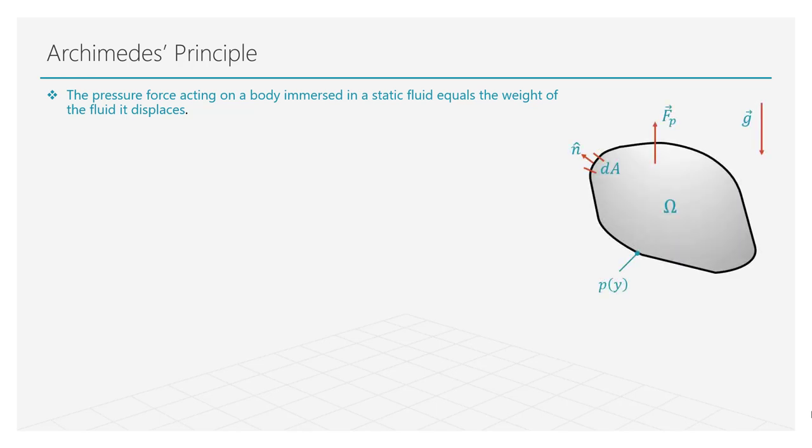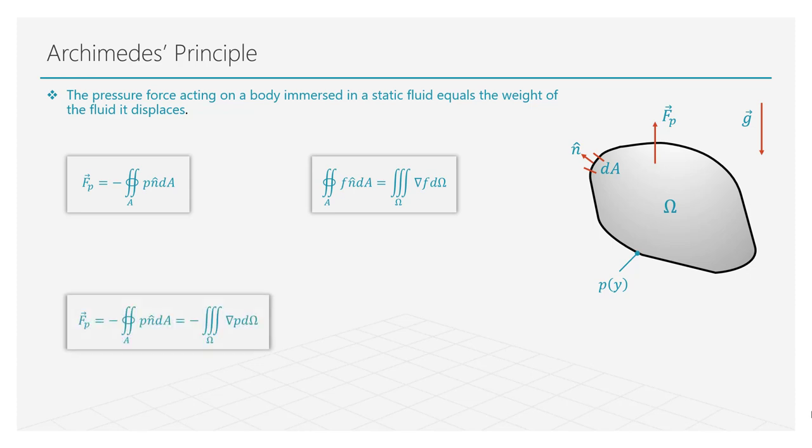Consider now a body of a generic shape, where omega is its volume. The object is subject to a pressure field dictated by the gravitational field. Integrating the pressure over the surface of the body, we can estimate the pressure force acting on it. Using a simple theorem, we can transform the surface integral into a volume integral, and find that the pressure force is equal to the volume integral of the gradient of the pressure.